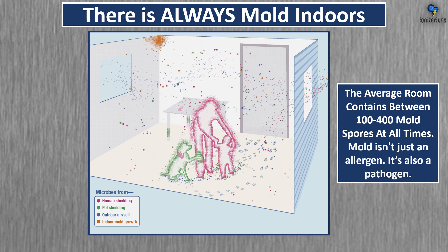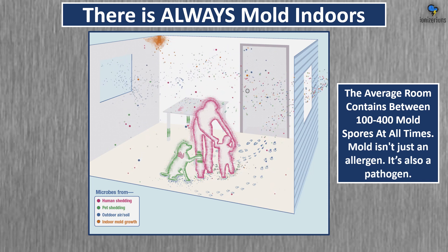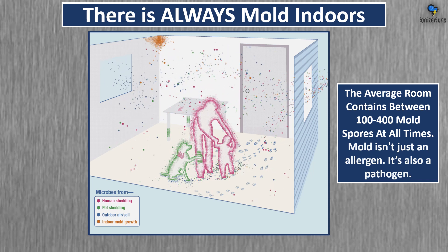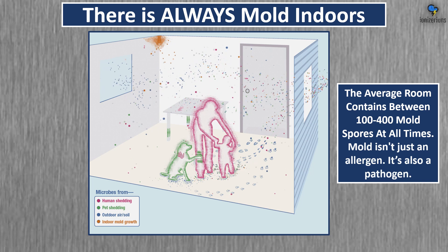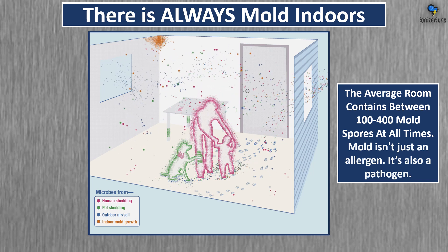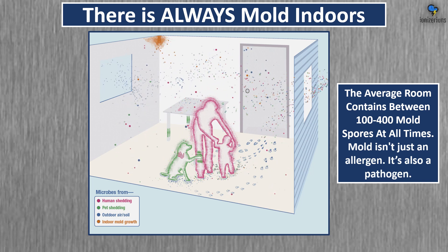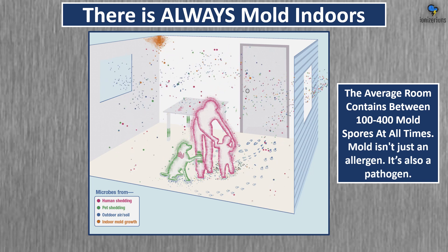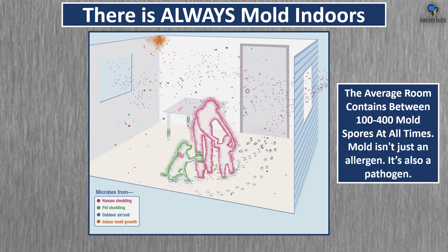I want to start off by saying there is always mold indoors. The average room contains between 100 and 400 mold spores at all times. Mold isn't just an allergen — it's also a pathogen.